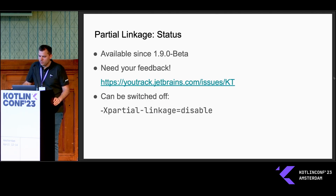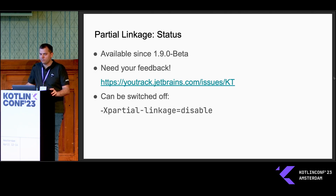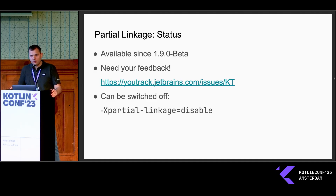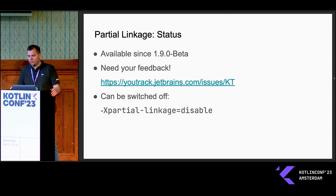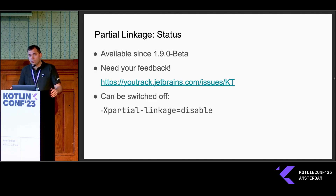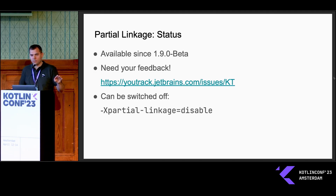We're going to enable partial linkage in Kotlin 1.9.0 beta, and it will be available by default in the Kotlin Native compiler. We'd like to ask you to try it and give us your feedback. If it works in a strange way or not how you expected, or if you see some bugs, please file an issue and we will investigate and fix bugs as soon as possible. And if for some reason you don't want to use it, there is a command-line key you can use to disable it entirely, and everything will work exactly as before.